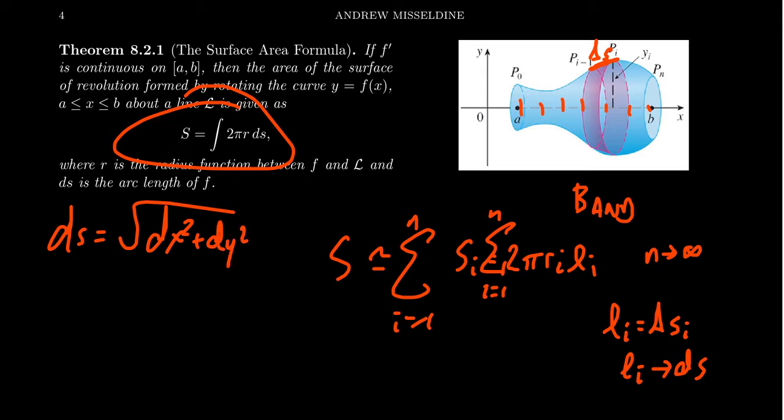That was a long derivation for where this arc length formula comes from, but with this formula we can now calculate the area of surfaces of revolution. Despite the difficulty arc length integrals had, surface area is typically much easier because the 2πr factor often enables a u-substitution or integration by parts that wasn't available for arc length. In the next video, I'll show you how to compute surface area, and it turns out it's not as complicated as it might seem.